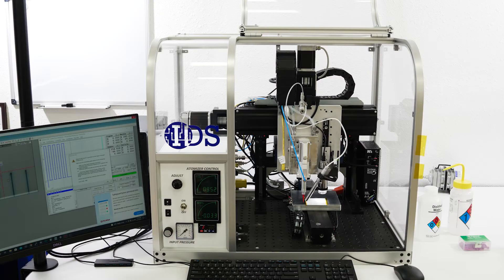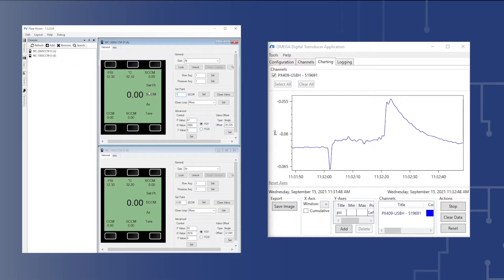Before starting to print, it is important to verify that the NanoJet print system is sealed correctly and that there are no leaks. The first step is to perform a leak test on the NanoJet system with the ink cartridge installed in the atomizer base.